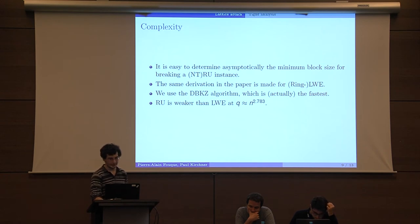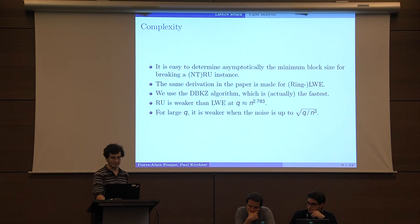It appears that NTRU is weaker than LWE for Q which are larger than N to the 2.78. What we have for large Q is that it's weaker when the noise is up to square root of Q divided by NQ, which is not optimal.